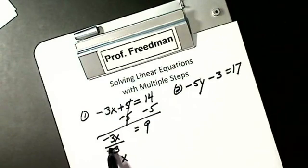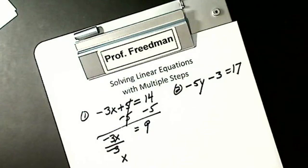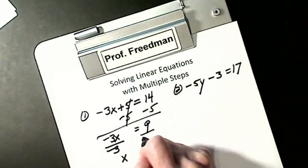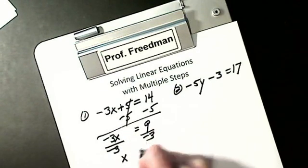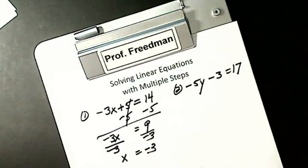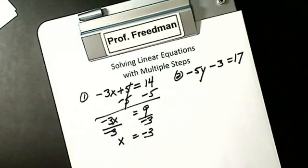If this would have been a plus, unlike signs would have given me a negative. What I do to one side, I do to the other side. So X is negative 3.